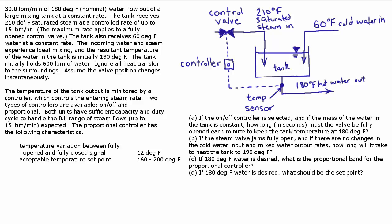Let's talk about the setup — specifically what's happening with A and B. We have this tank. There's cold water coming in and some amount of steam coming in, which can be controlled by a valve. We know the mass in the tank initially, and we know the temperature of the water coming out. There's a sensor sensing that output temperature and feeding it into a controller, which tells the valve to open and close to control how much steam comes in.